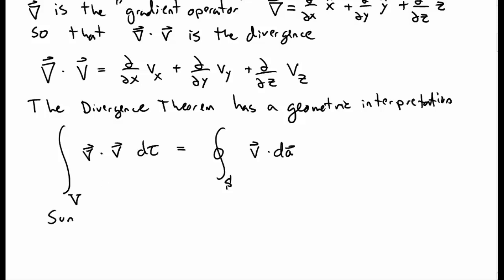So the geometric interpretation here is we would say that the sum of the sources of a fluid, or the sinks of a fluid, for instance, in some region v, must be equal to the flow in or out through the closed surface of that region. That's one way of thinking about what this means.